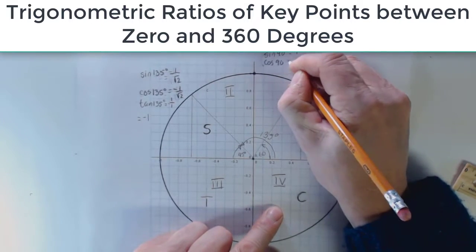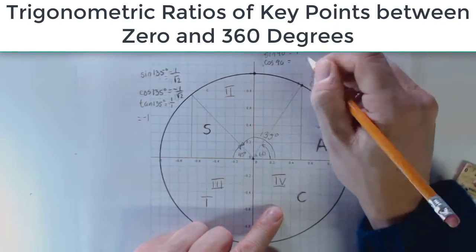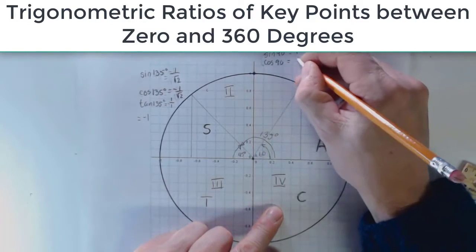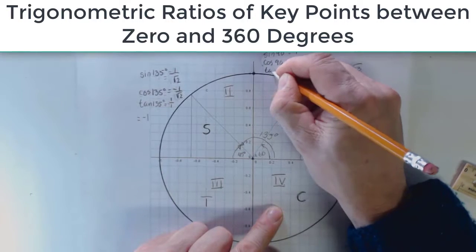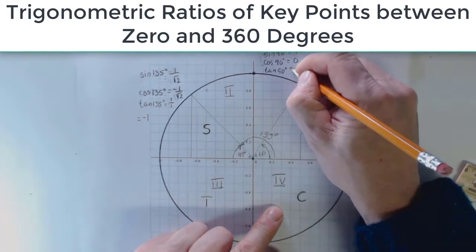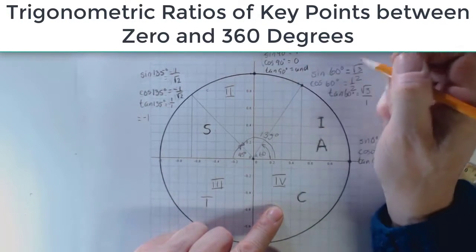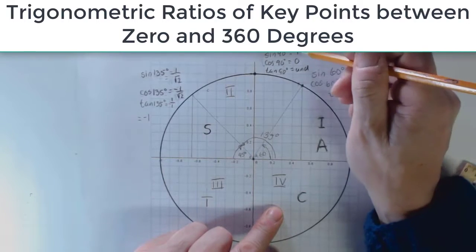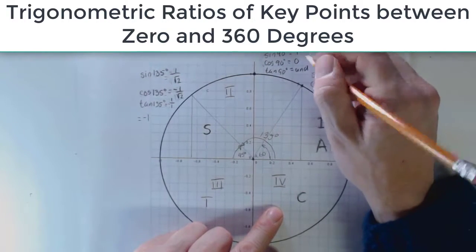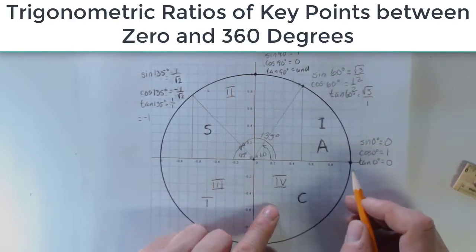Cosine of 90 degrees is the x-coordinate, or the adjacent side, which is zero, and the tangent of 90 degrees. Everybody ready? It is undefined, because if I were taking the opposite and dividing by the adjacent, I'd have one over zero. I would have something undefined.